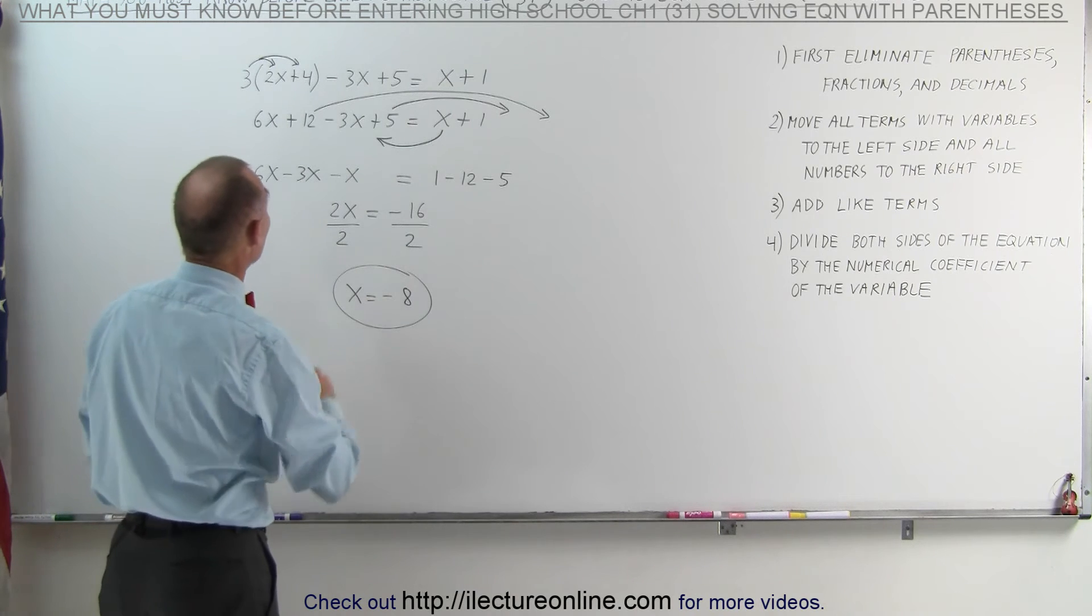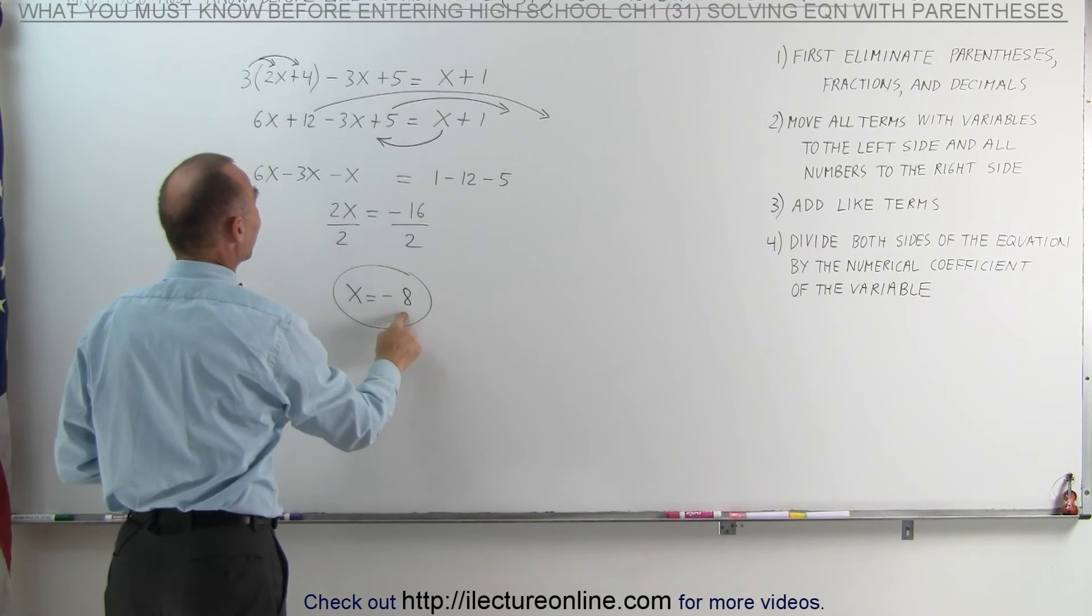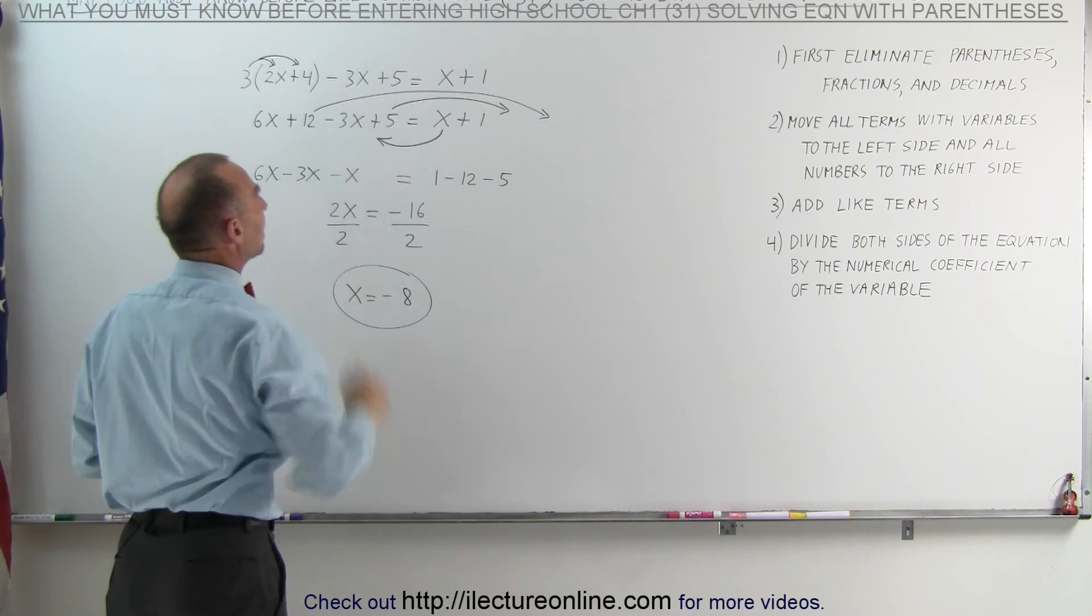We now find that if we replace every x in the original equation with a negative 8, the left side will equal the right side.